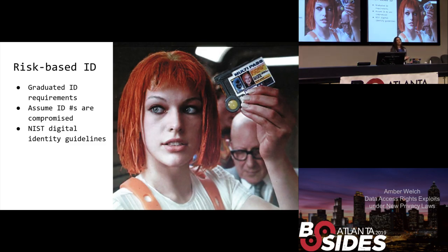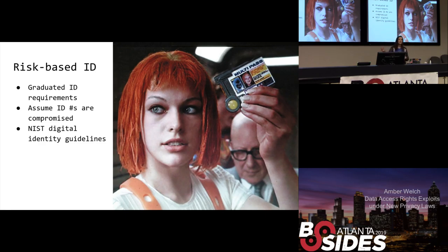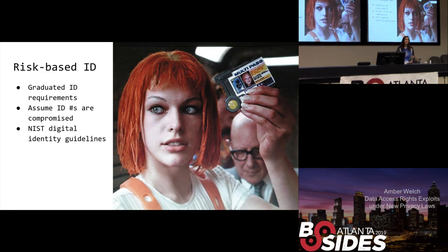Risk-based identification processes: you want to use graduated ID requirements. If you have highly sensitive information, don't just give it away to somebody who was able to answer a couple of easy questions. At the same time, if you have low-risk information, don't make somebody go through the DNA scan. You have to assume that all ID numbers are compromised, so even if you have a number on the account, if you're using that as an ID, you need to get the scan still — but also make sure that you're not making them email that to you in an unsecured format. All documents should be provided through some kind of secure communication, through a portal or other secure means. NIST also has digital identity guidelines, which can be helpful especially if you're working in an organization with a lot of sensitive information, and would give you really strong support to do diligence on this process.